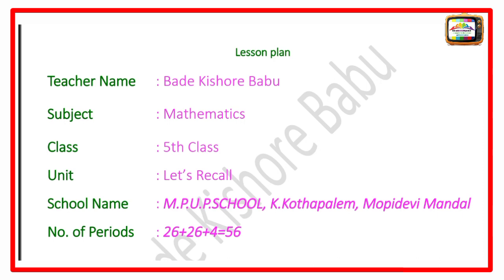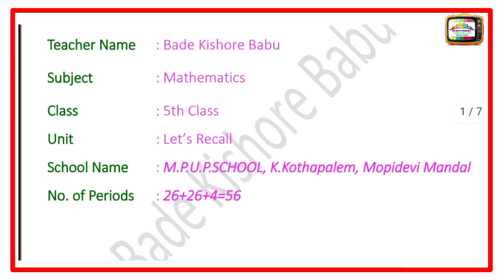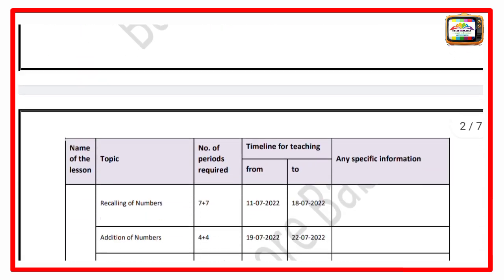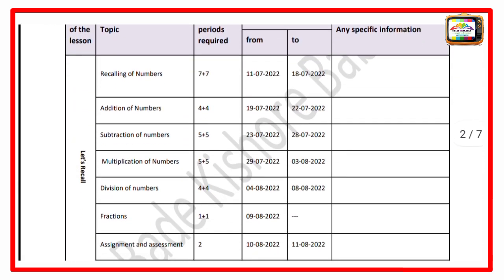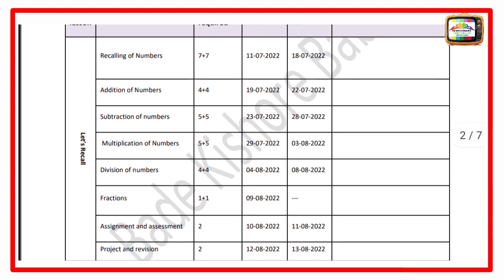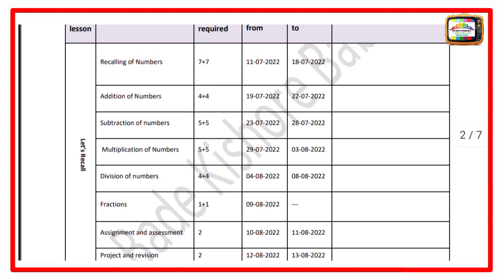In this lesson plan, there are periods allotment: 26 plus 26 plus 4 equals 56 periods. The topics covered in this lesson are: Recalling of Numbers, Addition of Numbers, Subtraction of Numbers, Multiplication of Numbers, Division of Numbers, Fractions, Assignment and Assessment, and finally Project and Revision.